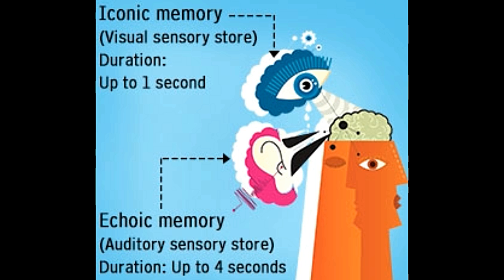The sensory memory associated with the sense of sight is referred to as the iconic memory, whereas the memory associated with the sense of hearing is referred to as the echoic memory.